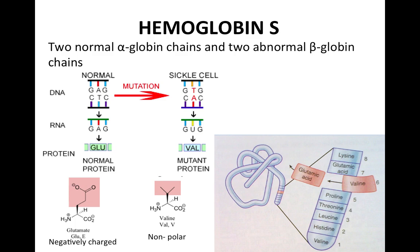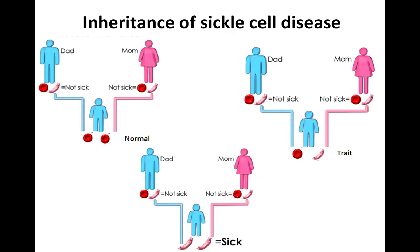Hence, normal hemoglobin, which has glutamate at the sixth position, will have high negativity, whereas sickle hemoglobin, which has valine at the sixth amino acid, will have lesser negativity. This charge difference is the basic principle we are going to use for the detection of sickle cell trait versus sickle cell disease. If both parents contribute normal hemoglobin, the child will be normal. If one contributes normal and the other contributes sickle hemoglobin, the person will be a trait (AS). If both contribute sickle hemoglobin, it will be called SCA — sickle cell anemia — or homozygous sickle cell disease (SS).